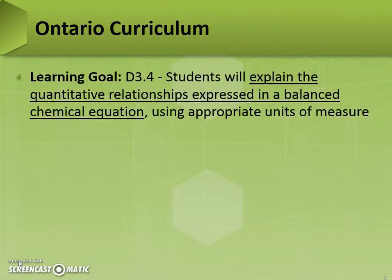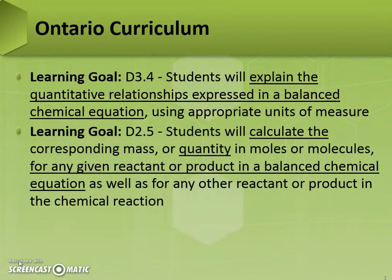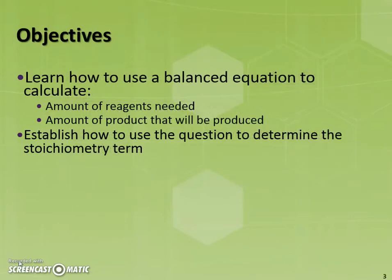The Ontario curriculum has as a learning goal that students will be able to explain the quantitative relationships expressed in a balanced chemical equation using appropriate units of measure. Also, students will calculate the corresponding mass or quantity in moles or molecules for any given reactant or product in a balanced chemical equation. Our objectives today are to learn how to use a balanced equation to calculate the amount of reagents needed or the amount of product that will be produced in a given reaction, and to establish how to use the question for a given equation to determine the stoichiometric term that we'll use.